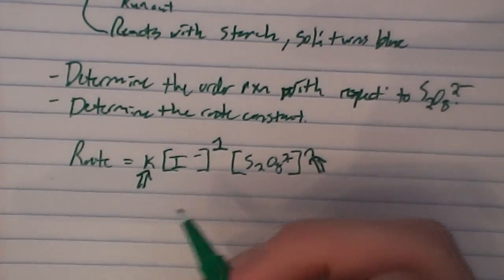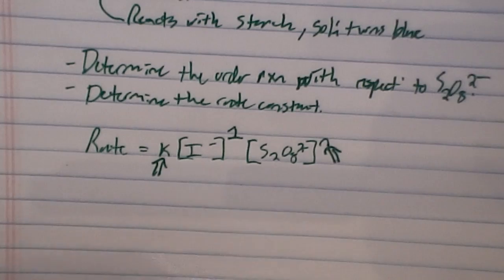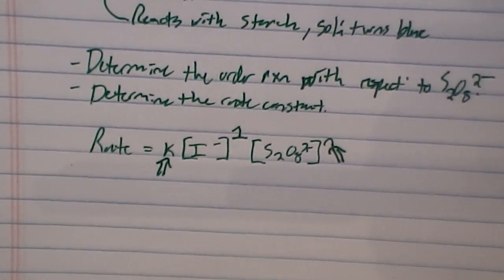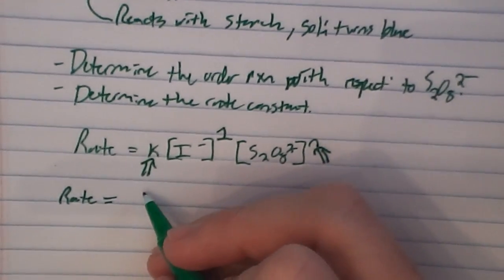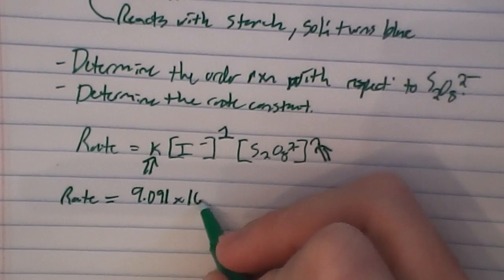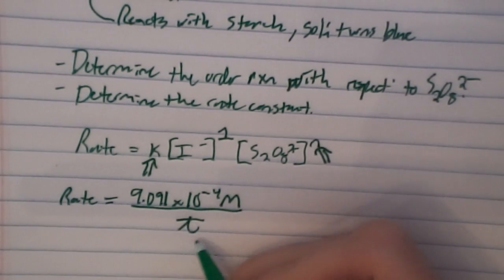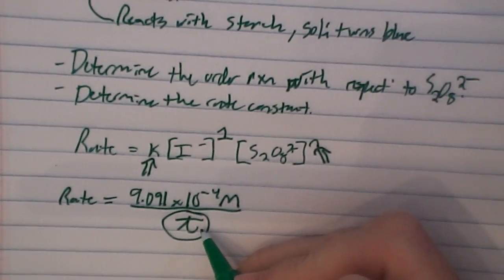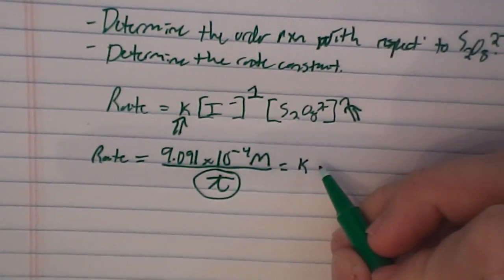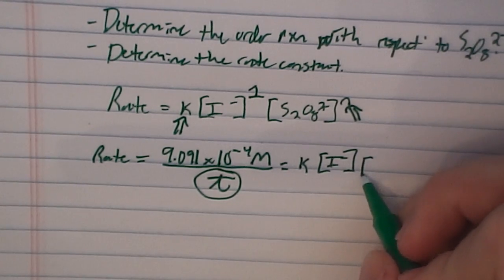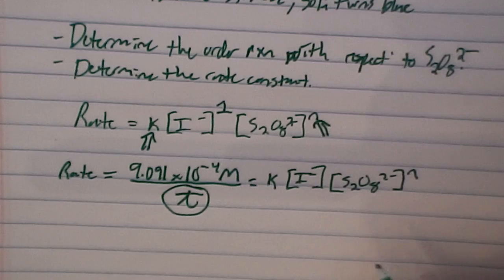The other piece of information we need is the rate. I'm going to give that to you — it's at the bottom of the first page in the experiment. The rate is equal to 9.091 × 10⁻⁴ mol/L per unit time. We're going to measure the time aspect and plug it back into the equation once we figure out the order of reaction.